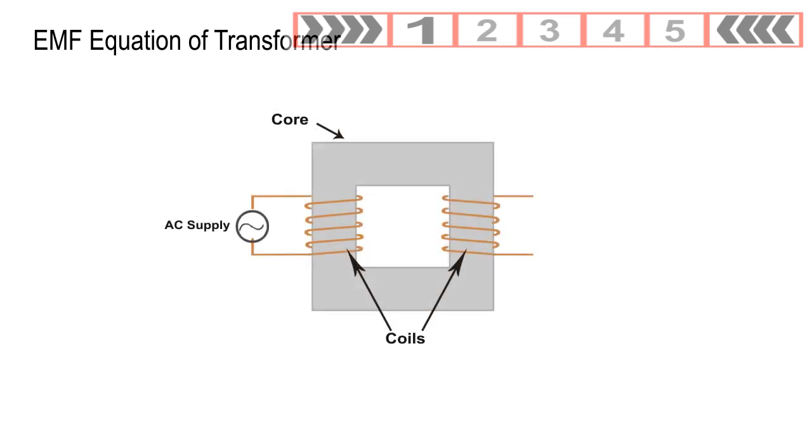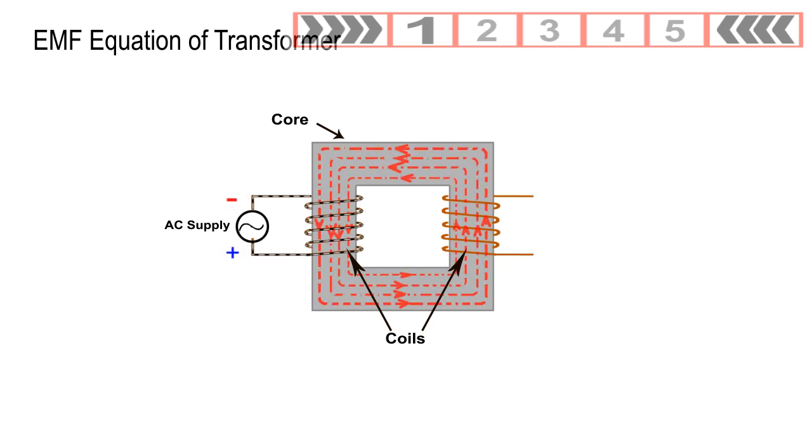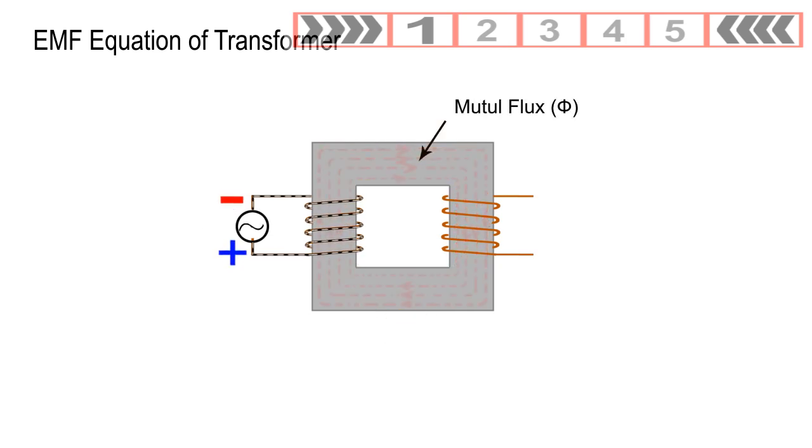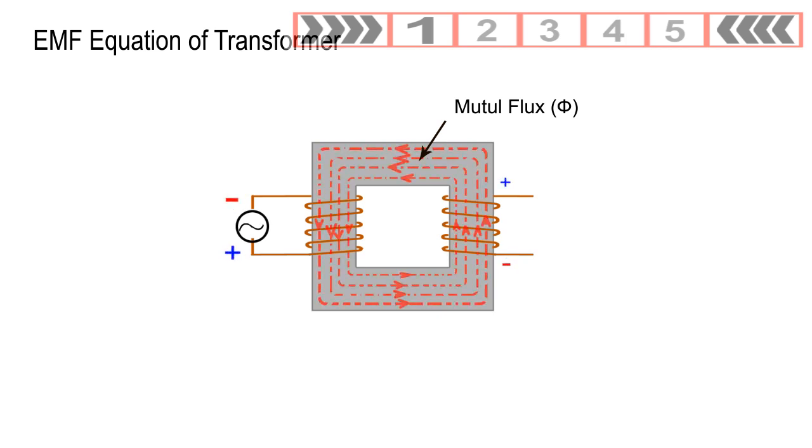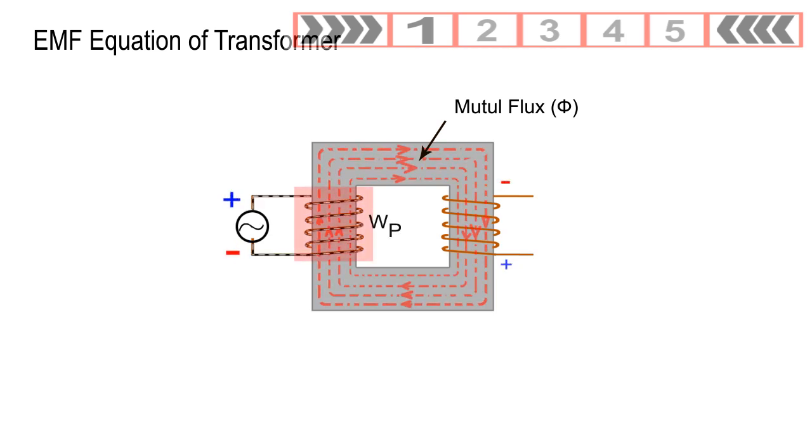EMF Equation of the Transformer. The mutual flux in passing through the magnetic circuit formed by the core links both the primary winding WP and secondary winding WS.